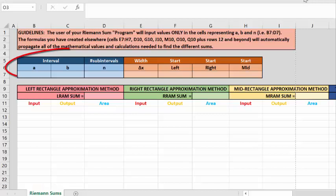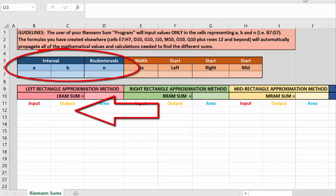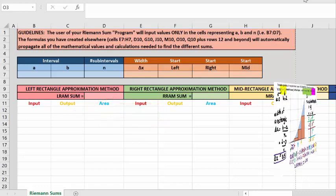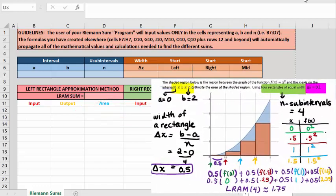Here's the template that we have created. The user's going to enter in values for a, b, and n, as well as changing the function of their preference. And the rest of our spreadsheet formulas are going to propagate those summation values automatically.